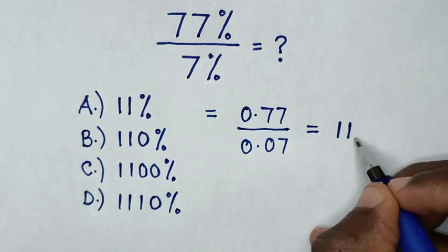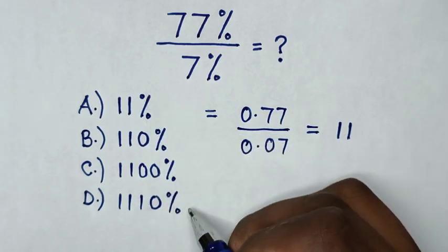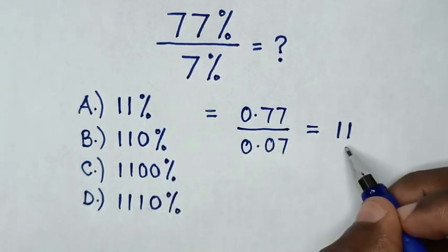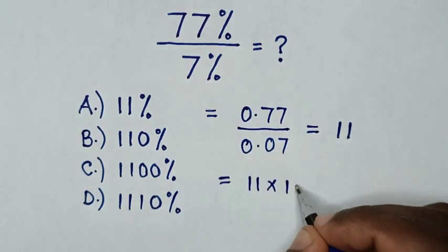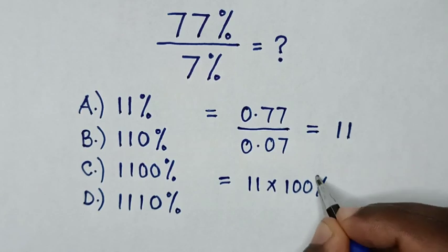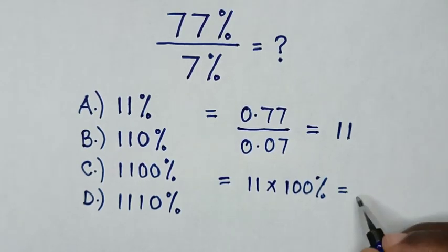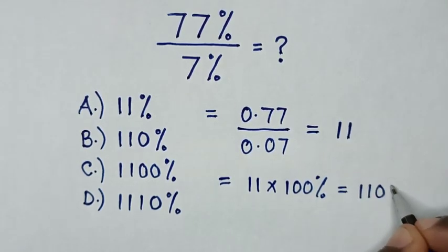But this is in decimals, and our answers in multiple choice are in percentage, so we'll convert this into percentage. Then it will be equal to 11 times 100%, which is equal to 1,100%.